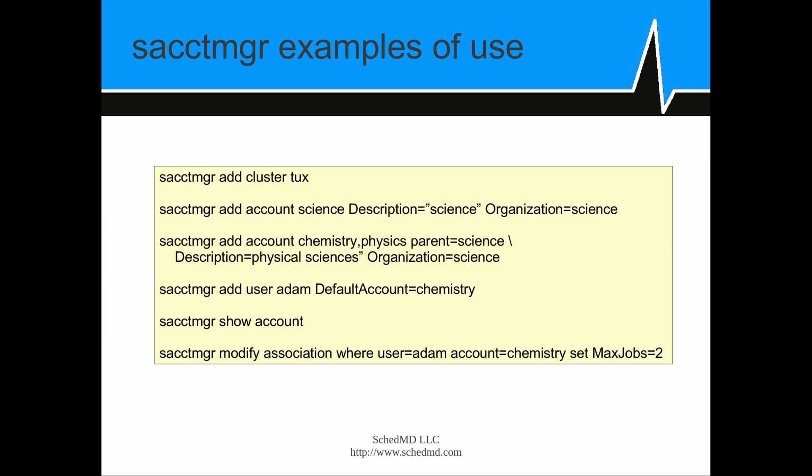Here are some examples of its use. In the first one, we add a new cluster. In the second line, we're adding an account called Science. In the third line, we're adding a couple of subaccounts of Science — one named Chemistry and one named Physics. Adding a user to an account, showing the contents of account elements associated with it, and so forth. The final example is an example of modifying an association — in this case for user Adam and account Chemistry, where you're setting the maximum number of jobs equal to 2. This would apply to all clusters unless you specify a specific cluster or a specific partition where you want that limit to apply.